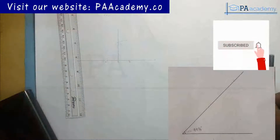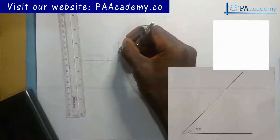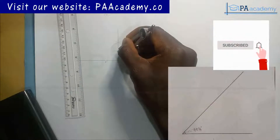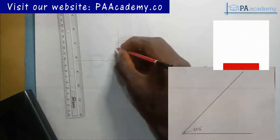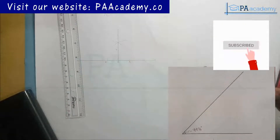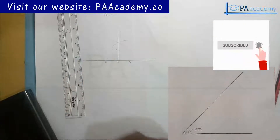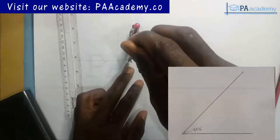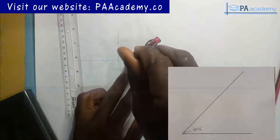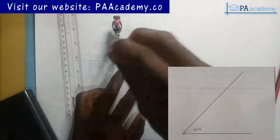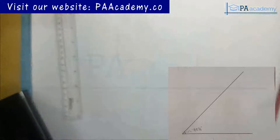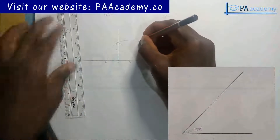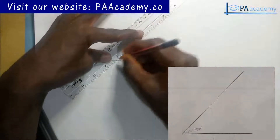We now have angle 90 degrees. Where the perpendicular line touches the semicircle, I'll call that point C. Next I want to bisect this 90° angle to get 45°. I bring back my compass, draw an arc from point B, then with the same length go to point C and draw another arc. From the point of intersection I draw a line to point O.